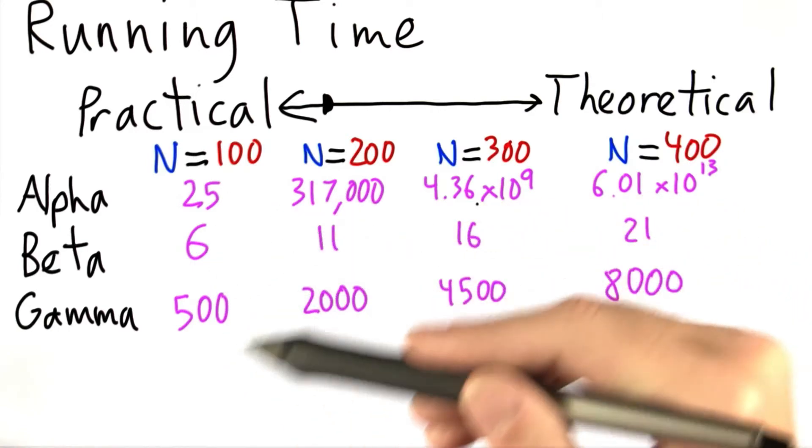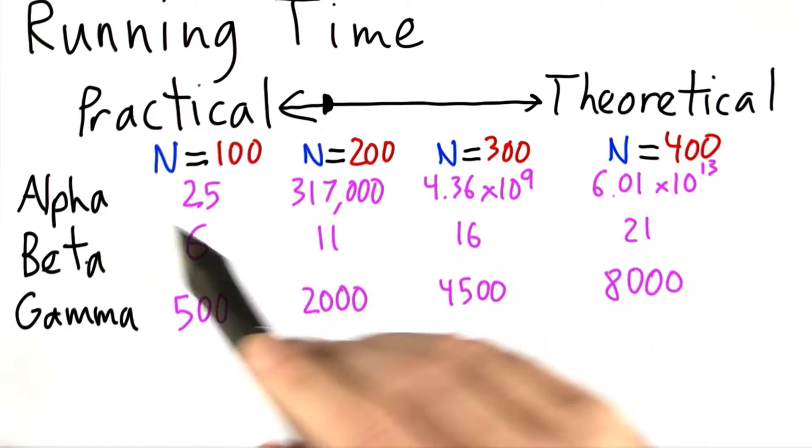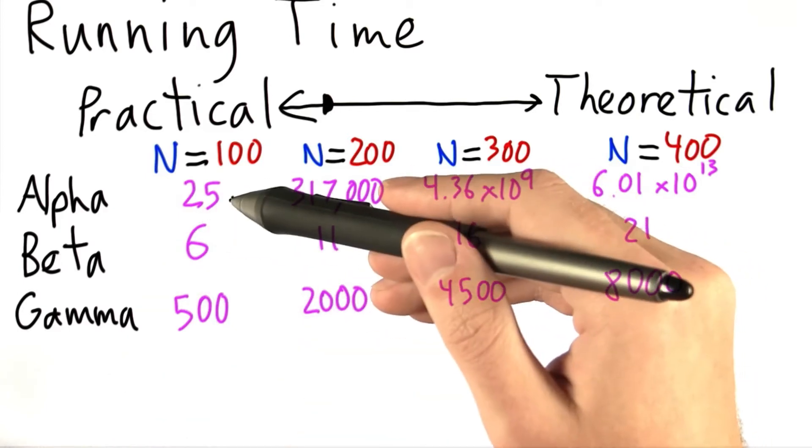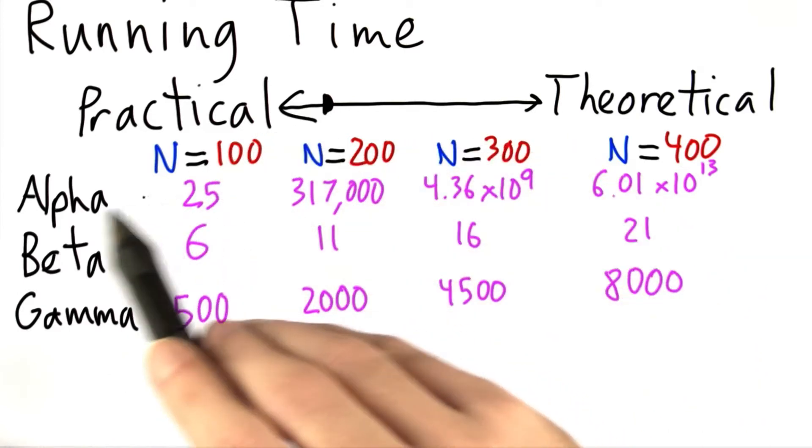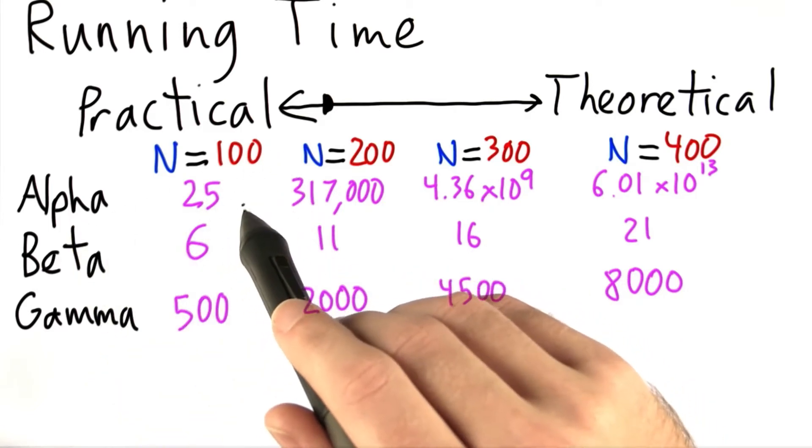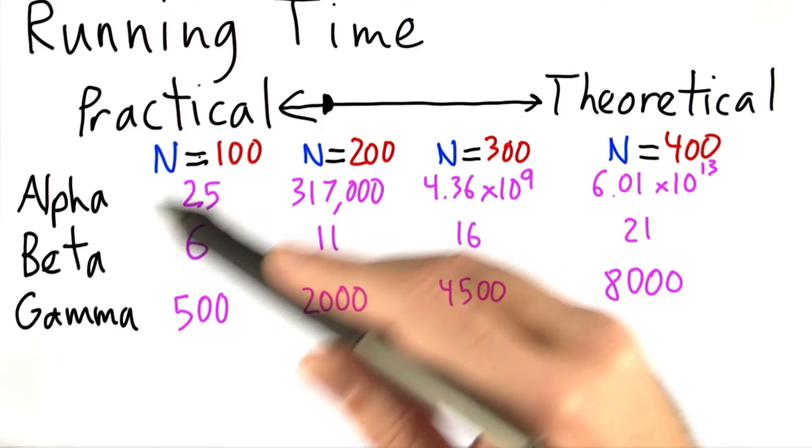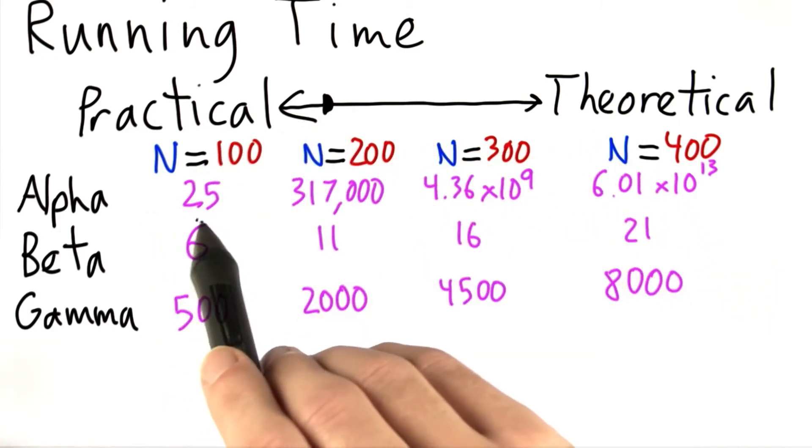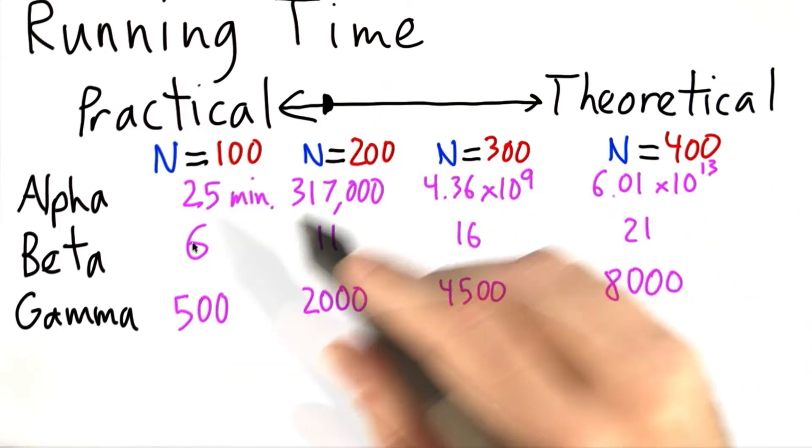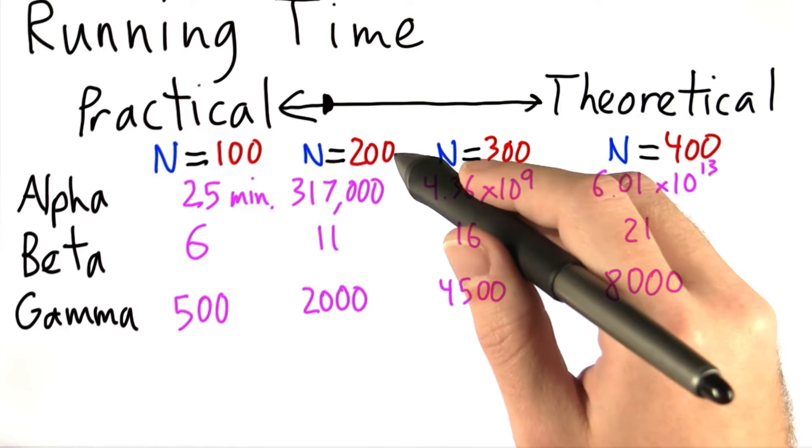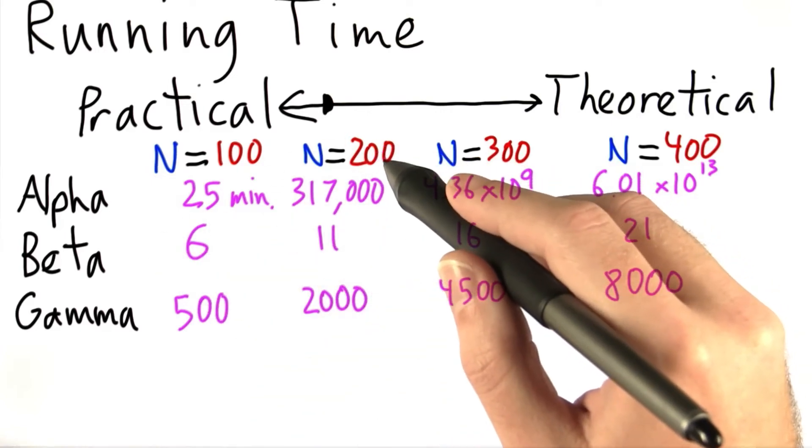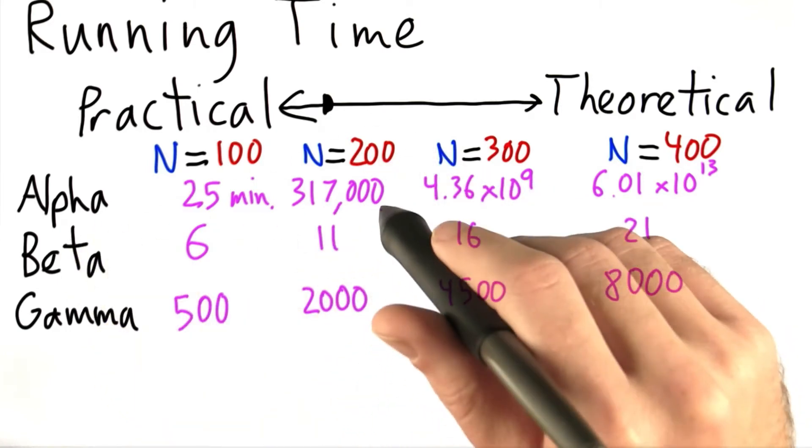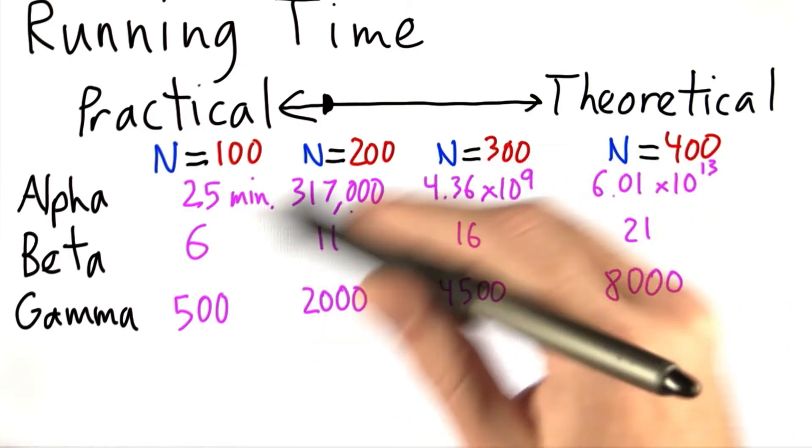Now this isn't just for one run of each of these algorithms. Let's say we're running each of these algorithms a million times on a random input of the given size. So we're running alpha a million times on an input size of 100 on different randomly generated inputs of size 100. And it's taking an average of 25, and all of these are in minutes. And similarly for an input size of 200, we're running alpha a million times on random inputs of size 200, and it's taking on average 317,000 minutes. So you can see it grows somewhat quickly.